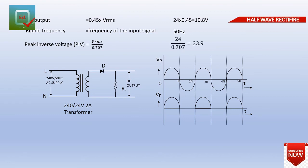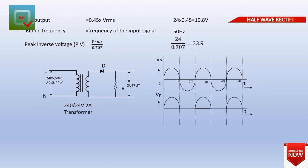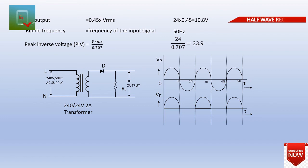We have the case where the input can be 24V, but the peak inverse voltage can be 83 to 84 volts. Therefore, the peak inverse voltage with 24V input — in this case, we will use this half-wave rectifier with 24V. We are using a diode rated for 220V. We use the diode accordingly.